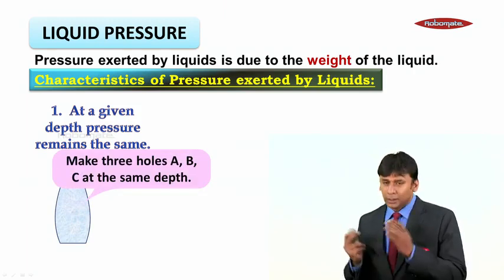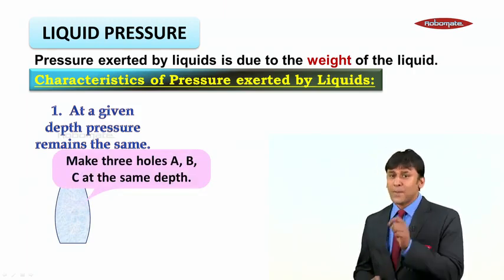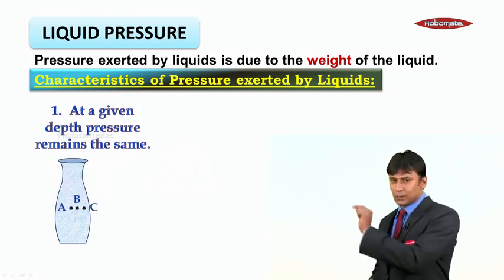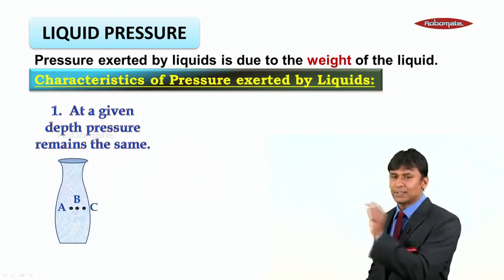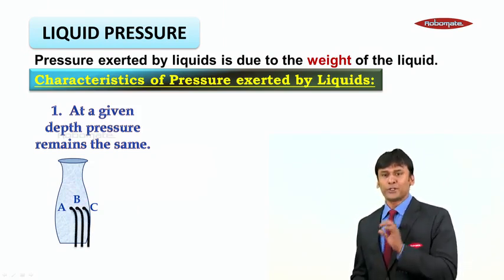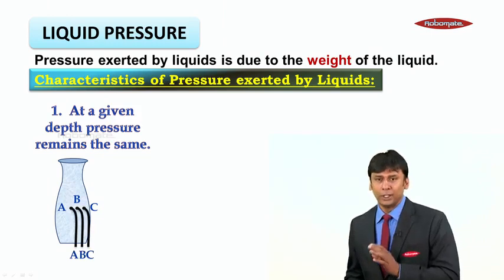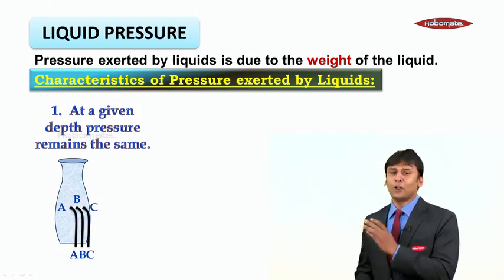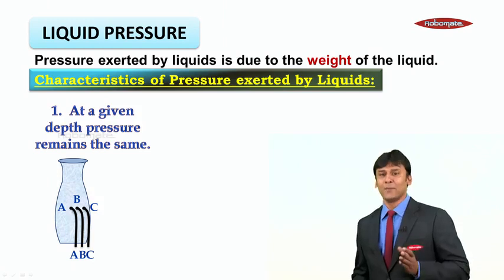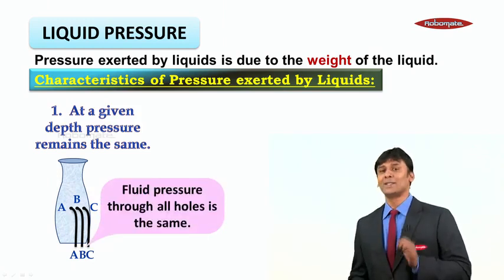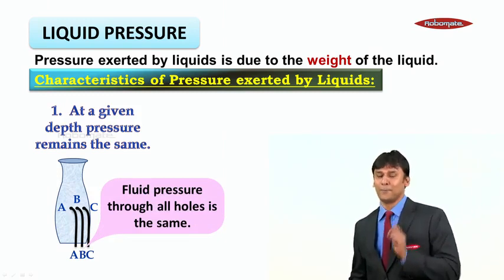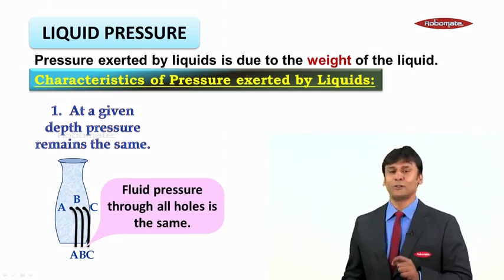Here, take a pot and make three holes A, B, and C at the same depth. Now, when water is poured inside, you can see the pressure at all three points A, B, and C is the same, as the depth is the same. So fluid pressure through all the holes is the same as the depth is the same in all three cases.